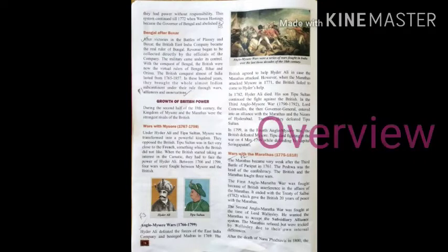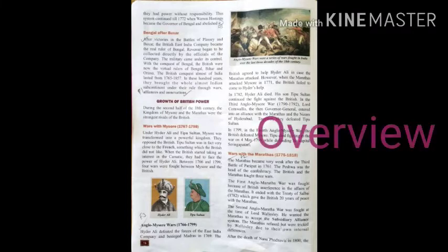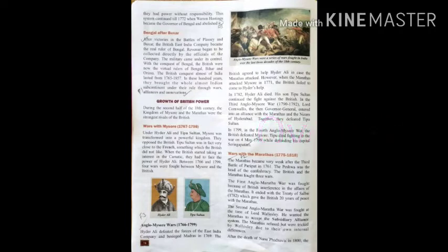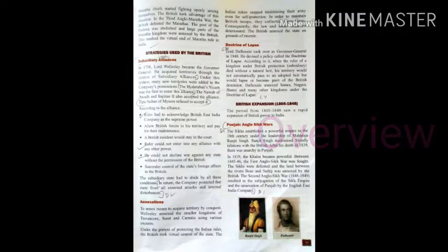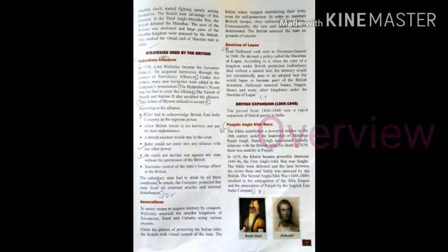Then we will read how British power grew in India. Then we will read the wars with Mysore — that is, Hyder Ali and Tipu Sultan. Then we will read about the wars with Marathas. Then we will see the different strategies used by the British to take control of India. In this we will read about subsidiary alliance, annexations, and the Doctrine of Lapse. Then we will read about British expansion — that is, Punjab, the Anglo-Sikh War, and annexation of Awadh.